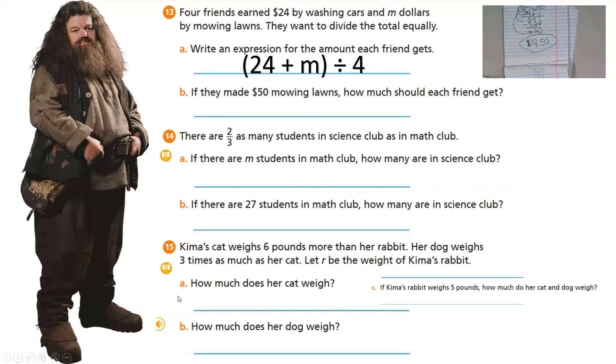Let's go to number 14. Number 14 says, there are two-thirds as many students in science as math. If there are M students in math, how many are in science? Well, yeah, we don't have enough information to know that answer. But what we do know is there's two-thirds of M. There's two-thirds of M. Of means multiply. So, two-thirds times M. So, now we have an equation. And then now they're like, yo, yo, yo. If there's 27 students in math, how many are in science? Ooh, two-thirds of means multiply 27.